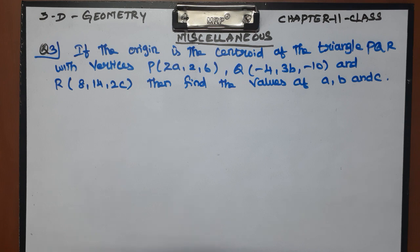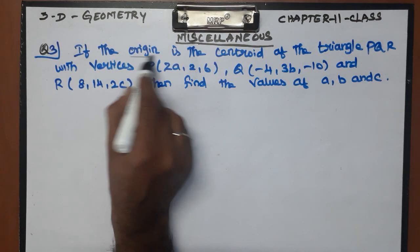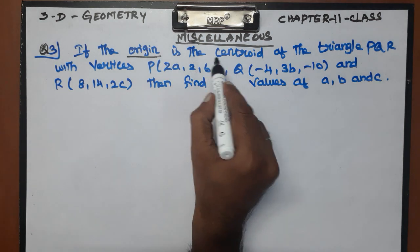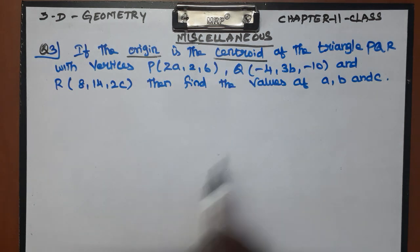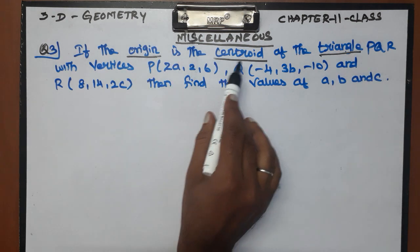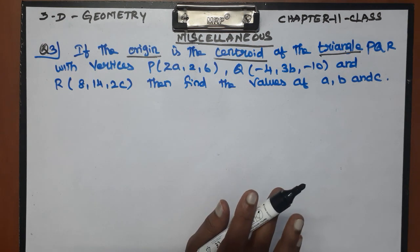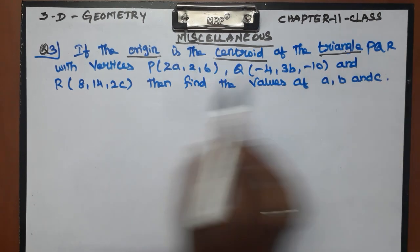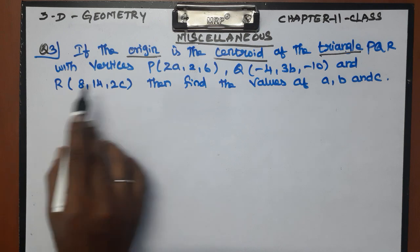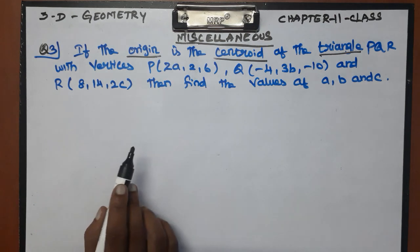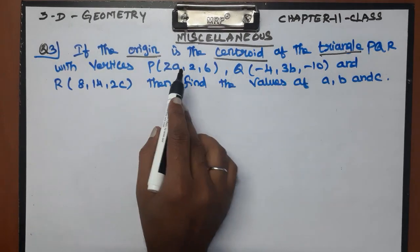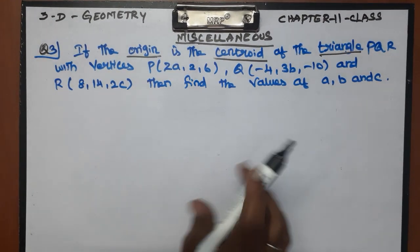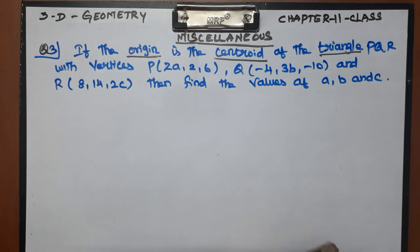Let's talk about the origin of the triangle. If the origin is the centroid of the triangle PQR with vertices PQR, one coordinate is A, one is B, one is C. So obviously we can find the values of A, B, C.